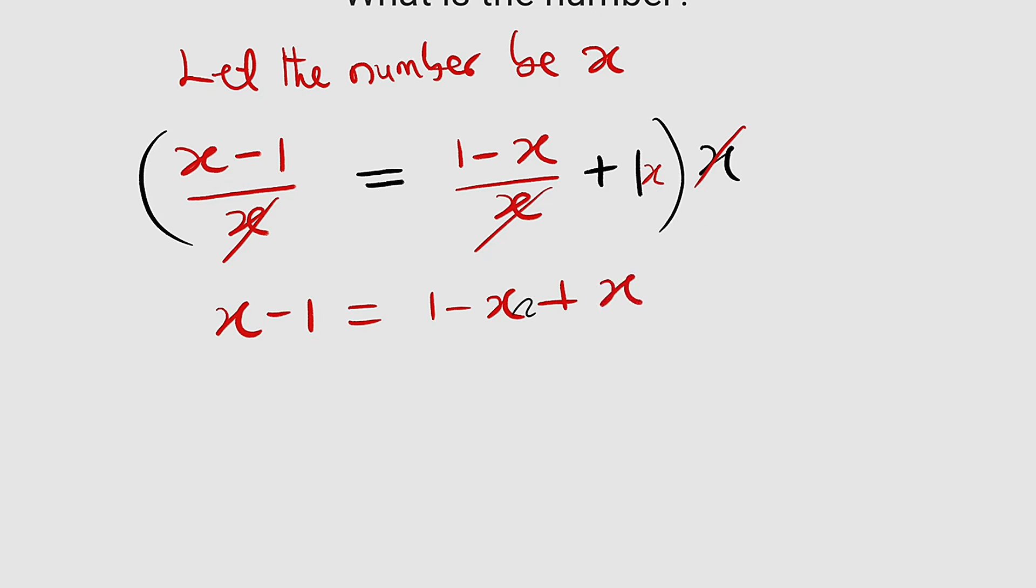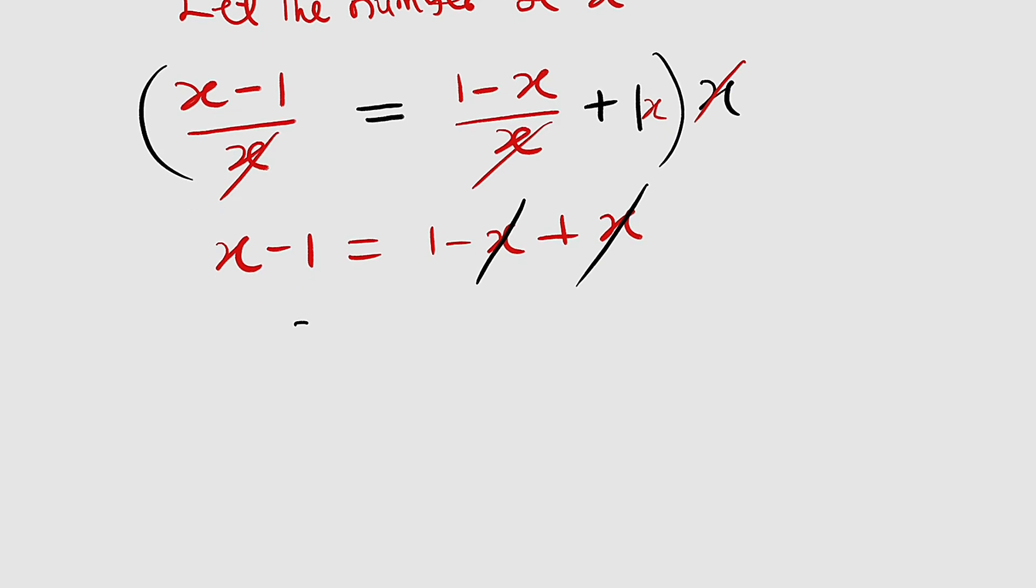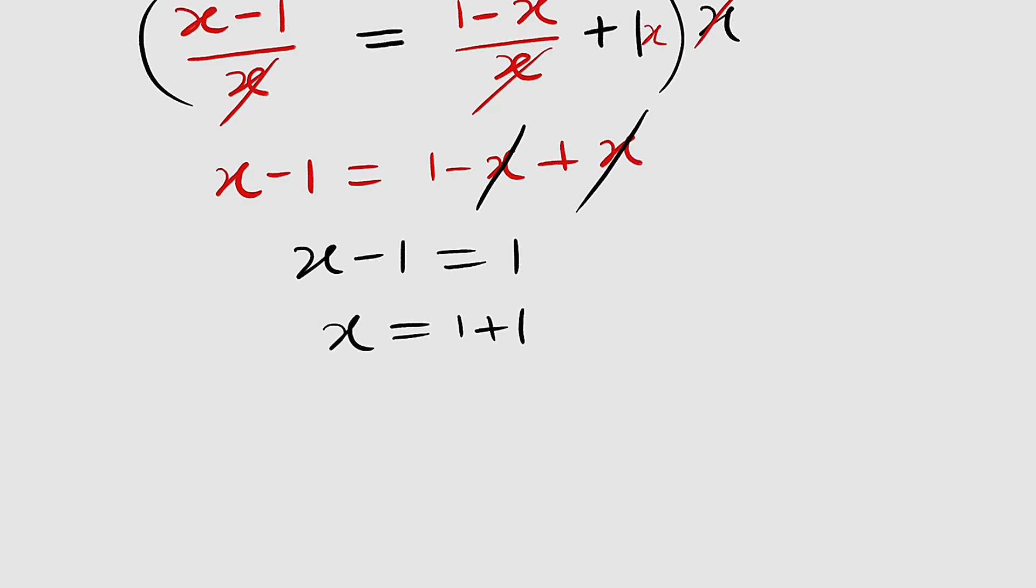From here, the x terms cancel. We have x minus 1 equals 1. We add 1 to both sides. We have x equals 1 plus 1, and finally you can see that x is equal to 2. So x equals 2 is our solution.